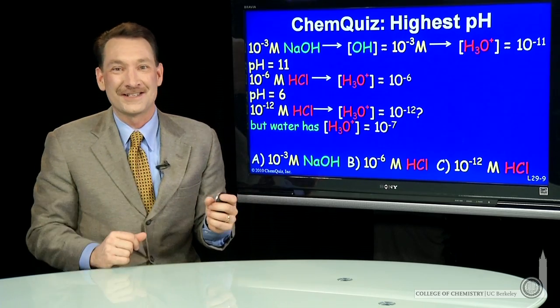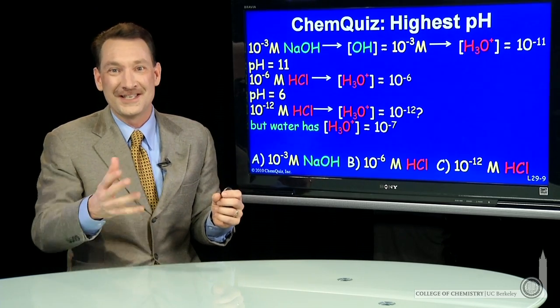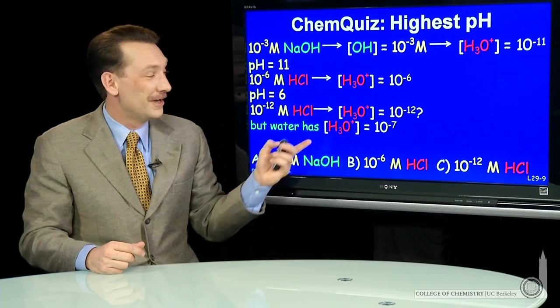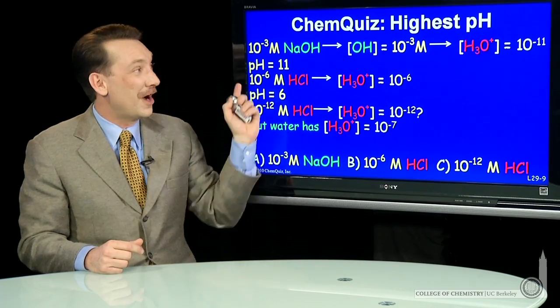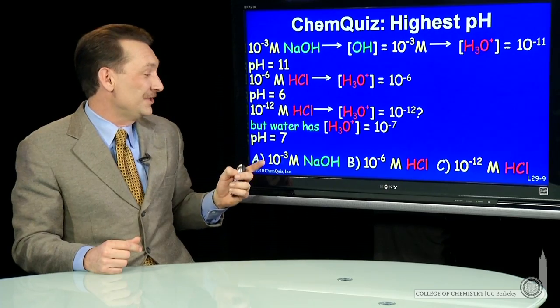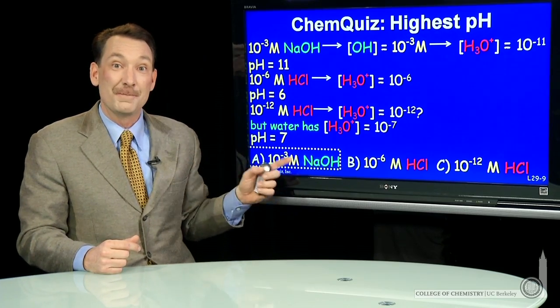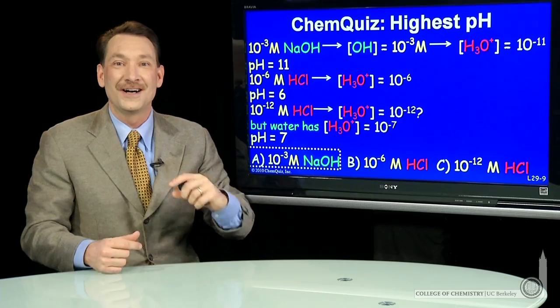And of course, that's not going to change the pH. It's going to stay essentially pure water, pH of 7. So of these three, the highest pH is the NaOH solution, the basic solution with a pH 11.